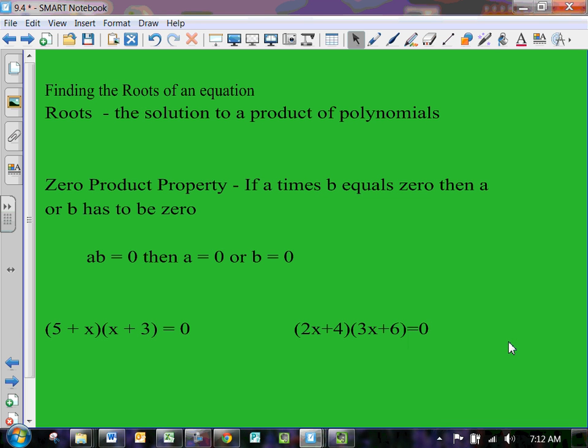All right, so today in class we looked at how to factor out monomials from a polynomial, trying to break this apart and get a number and a variable out of it. The way that's actually used is called the zero product property, and it's finding the roots.